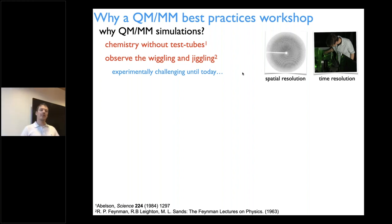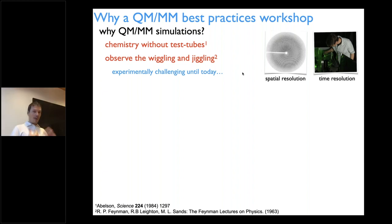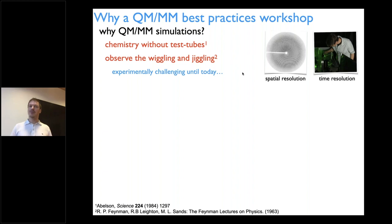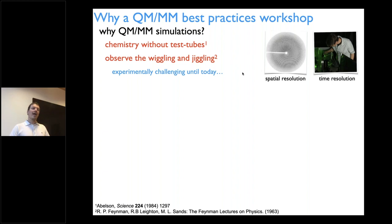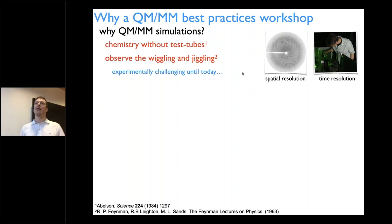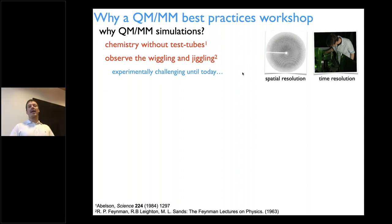Why QM/MM simulations? QM/MM simulations allow you to do a real chemistry experiment — where you are changing chemical bonds, making new products — without test tubes, so you don't get your fingers dirty. It also allows one to observe the famous wiggling and jiggling of atoms which underlies all of life, and that is very hard to observe experimentally.